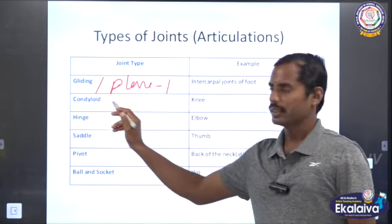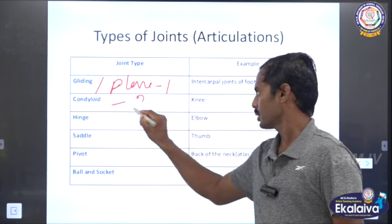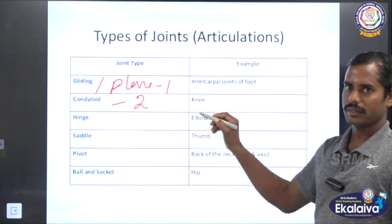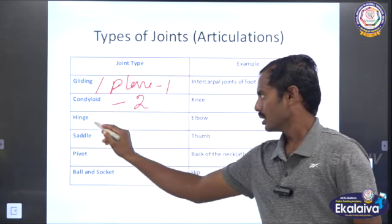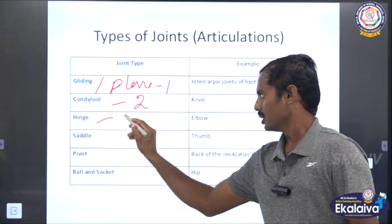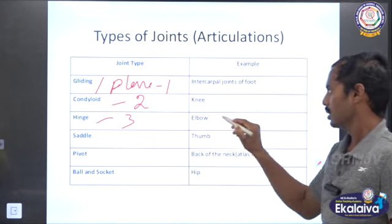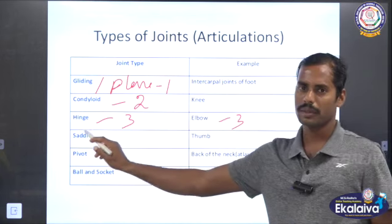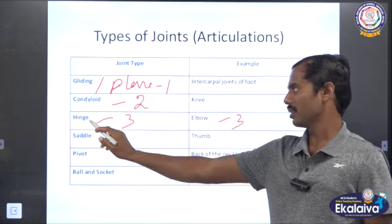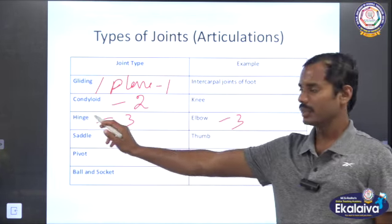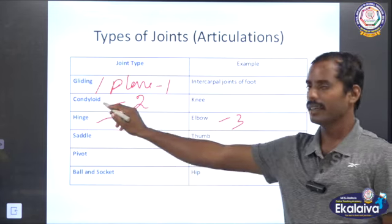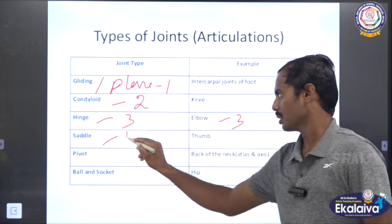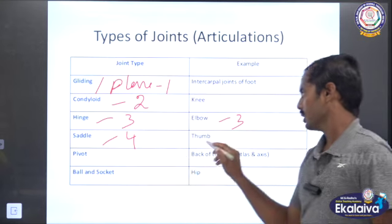Condyloid — number two: knee joint. Hinge joint — number three: elbow. Anatomically, the elbow is a hinge joint. Knees are condyloid. Saddle joint — number four: thumb.